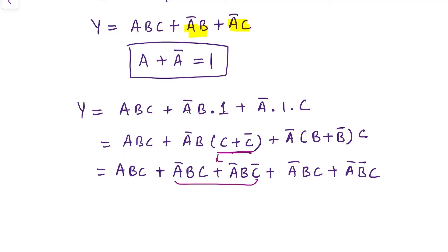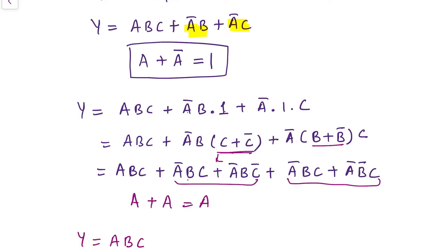We can apply the Boolean laws to expand: A'B(C + C') gives A'BC + A'BC', and A'(B + B')C gives A'BC + A'B'C. Each added term results in two product terms. Now we need to check for any repetitive terms — if a term is repeated, we write it just once because A + A = A. Checking: A'BC appears twice, so it is written once. The final canonical SOP is Y = ABC + A'BC + A'BC' + A'B'C.